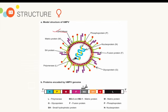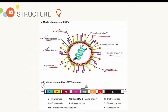The virus contains a lipid bilayer as the outer sheath with two types of surface proteins: fusion protein and glycoprotein. Inside, the nucleic acid contains phosphoprotein and polymerase enzyme. On the surface it also has SH protein, and below the lipid bilayer there is the matrix protein. The HMPV genome encodes polymerase, glycoprotein, fusion protein, matrix protein, phosphoprotein, and nucleoprotein.